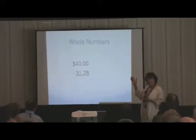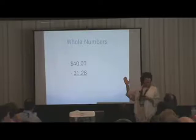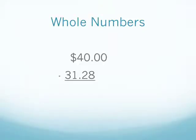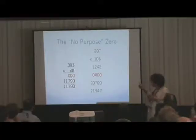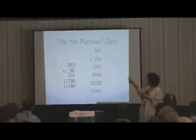Starting in third grade, kids start to subtract whole numbers and there are lots of zeros in the number on top — which is either called the minuend or the subtrahend or the difference. And what do they do? They learn this rule, just like Mark said, to cross all the zeros and make them nines and subtract. And my question to them always was, what happened to that extra penny? You will see this starting in third grade all the way through fifth grade.